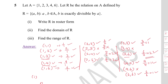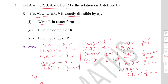Question 5: A = {1, 2, 3, 4, 6}. Let R be the relation on A defined by R = {(a, b) : a, b ∈ A and b is exactly divisible by a}. Write R in roster form, then find domain and range. We check each pair where b/a is a whole number. With a = 1: (1,1), (1,2), (1,3), (1,4), (1,6) are all valid since any number is divisible by 1.